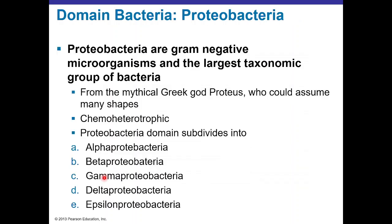Proteobacteria are gram-negative microorganisms and the largest group of bacteria. They were named after the Greek god Proteus, who can take different shapes. All Proteobacteria are chemoheterotrophic and can be subdivided into Alpha, Beta, Gamma, Delta, and Epsilon Proteobacteria.